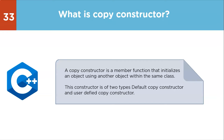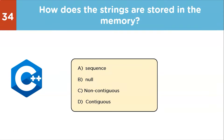Multiple choice question: how are strings stored in memory? Options are: sequence, null, non-contiguous, and contiguous. The correct answer is contiguous — the characters of strings are stored contiguously in memory.